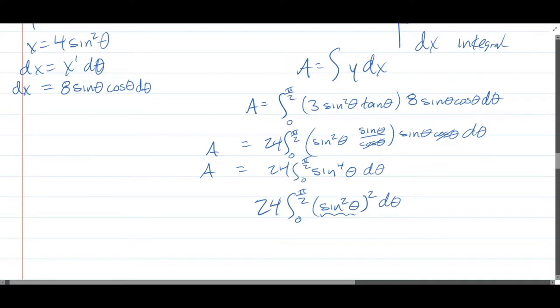So you use your half angle formula just on the inside. And then, once you have that, you're going to FOIL it out. And on one of the terms that's squared, you're going to have to use your half angle again. So you do it on the sine squared and then FOIL it out.